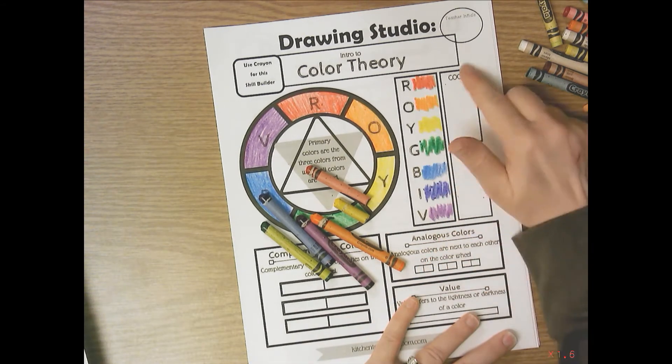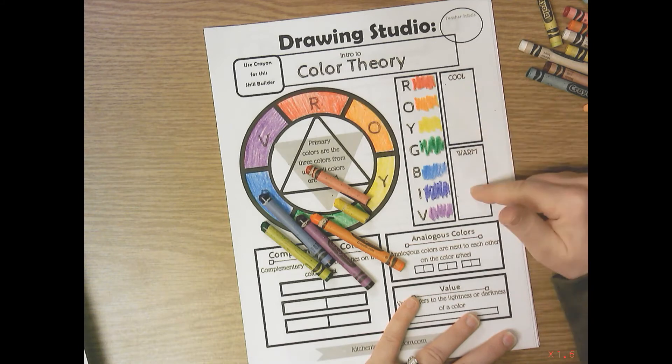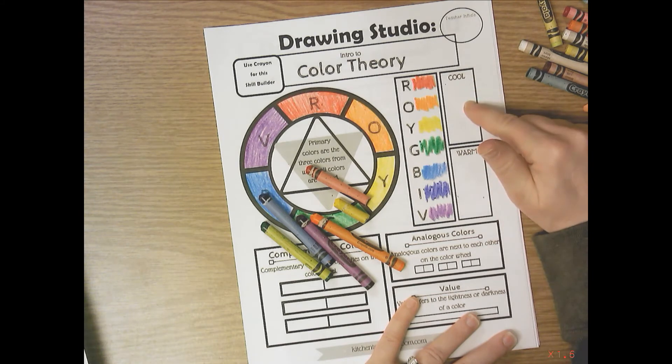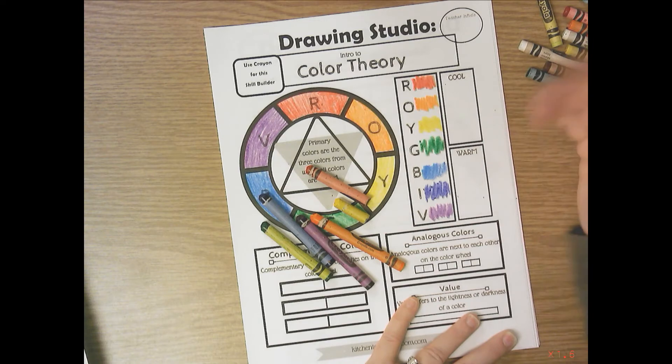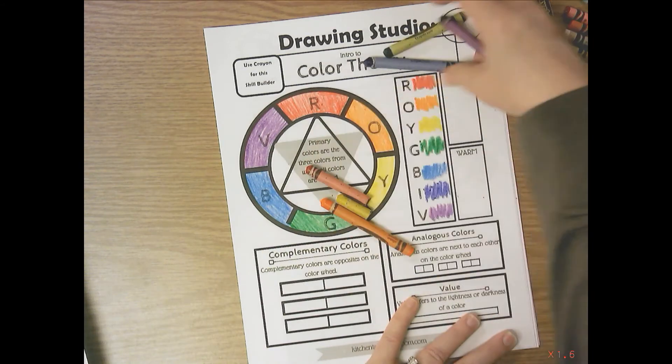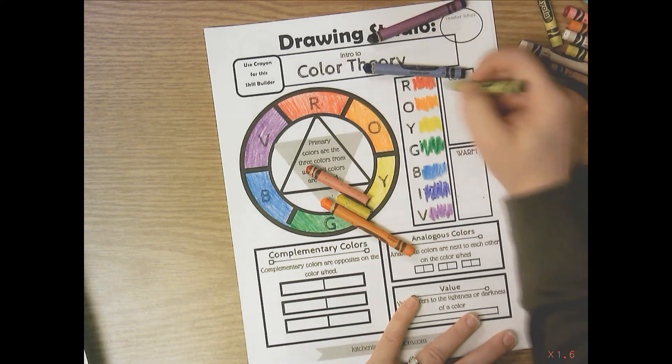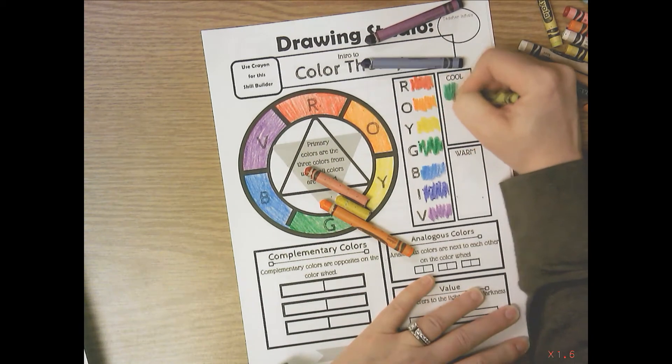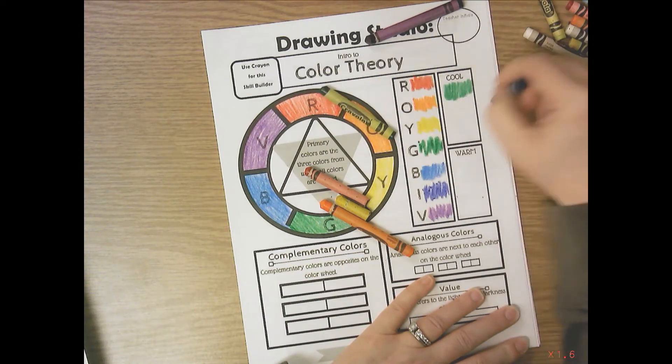So then you need to fill in the cool colors and the warm colors. Cool colors are colors that you think of cool things like an ice cube or a pool of water. So cool colors are green, blue, and violet. So you're going to color those into the cool space.